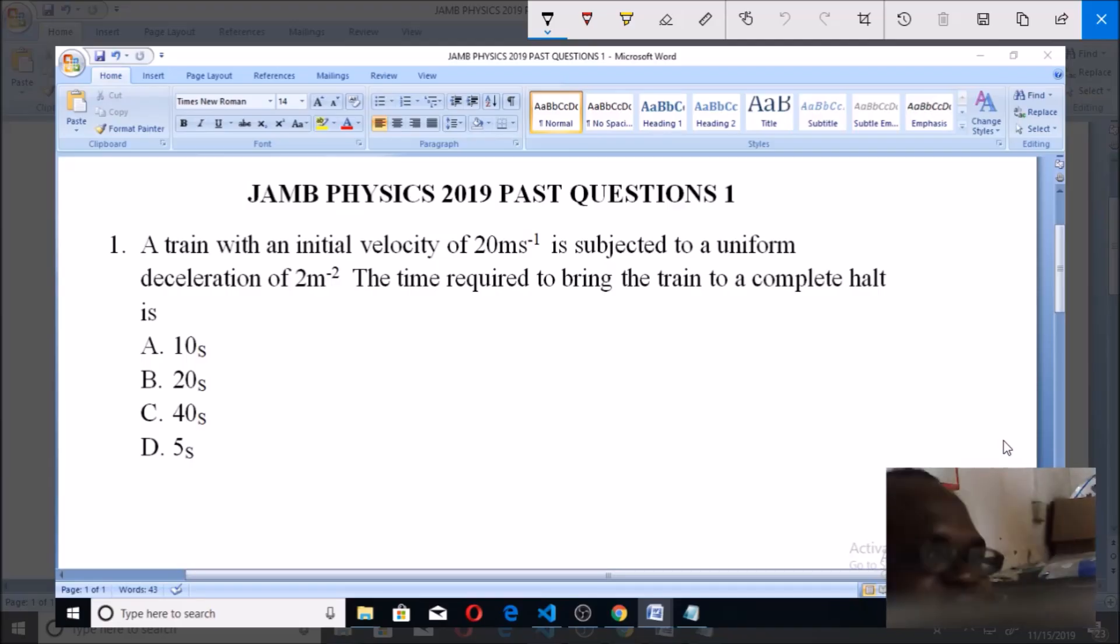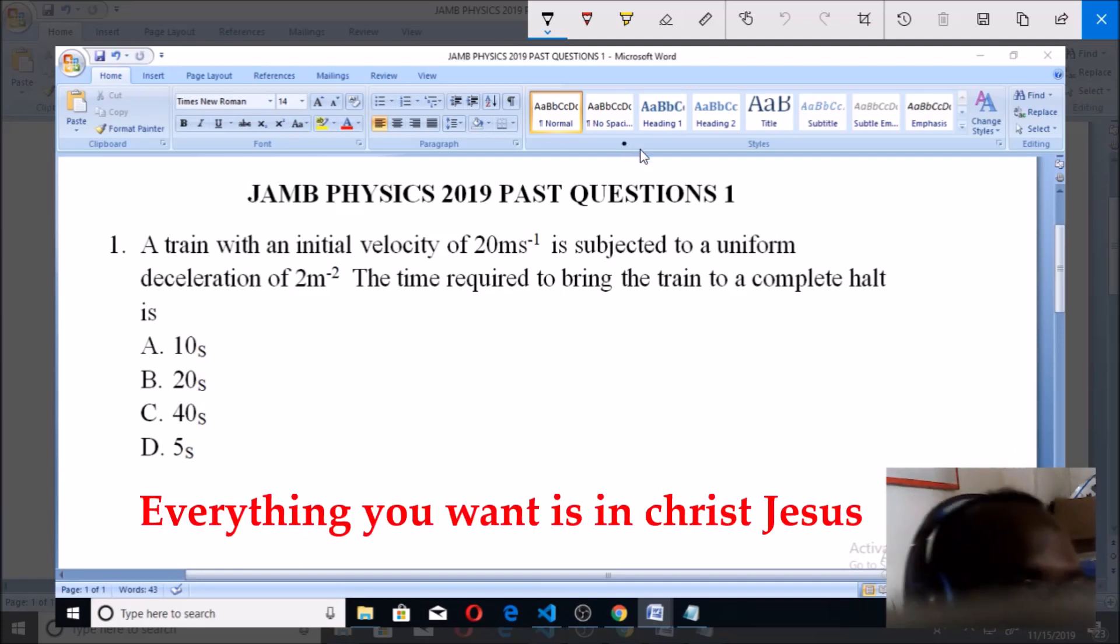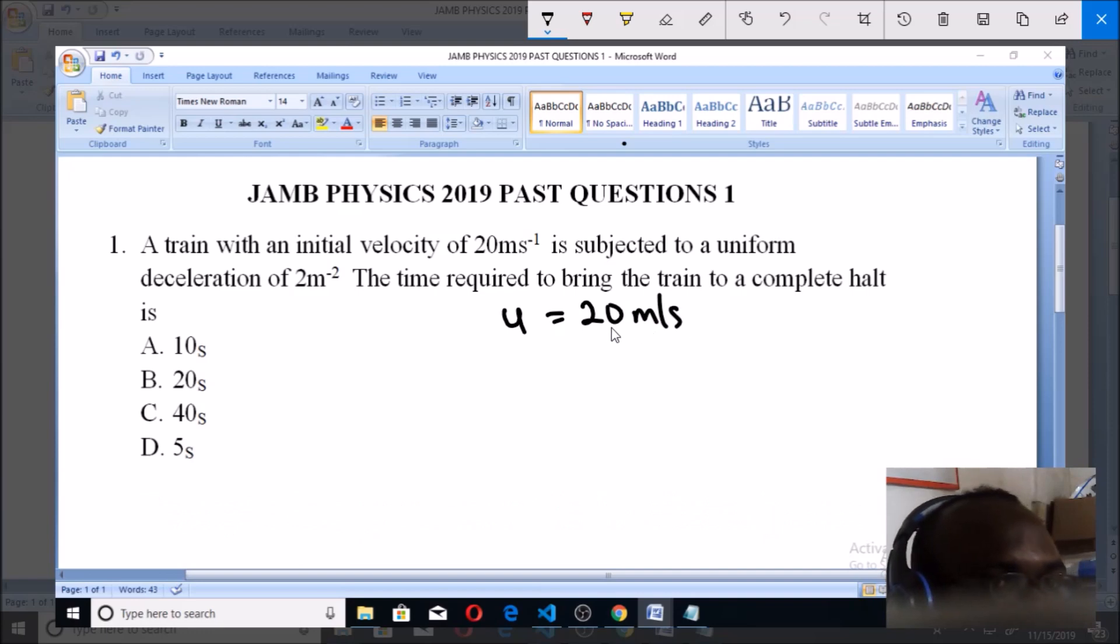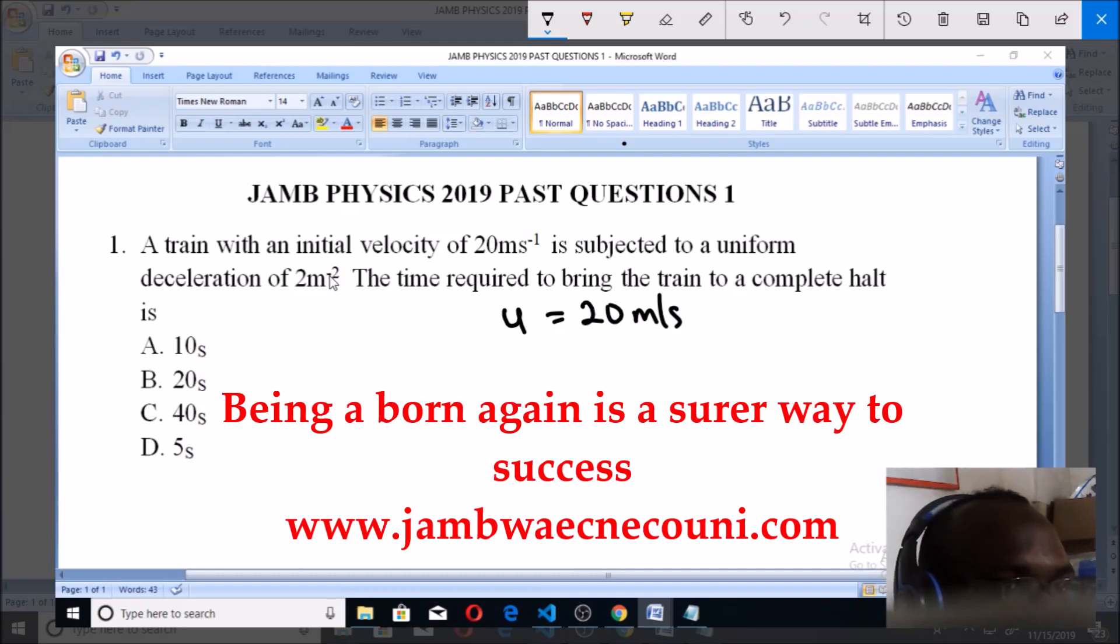Hello and welcome again. Let's look at this JAMB past question for physics 2019. Question number one: A train with an initial velocity of 20 meters per second—you know initial velocity is represented with u, 20 meters per second—is subjected to a uniform deceleration of 2 meters per second squared.